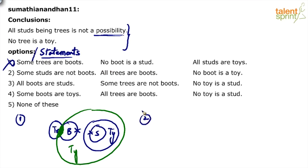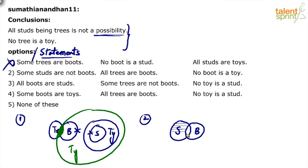Now do it for option two. The first statement is: some studs are not boots. This is important - the statement form is some A's are not B's. For both 'some A's are B's' and 'some A's are not B's', we have the same basic diagram. But when you say some studs are not boots, we are referring to the exterior region - those outside studs are not boots.